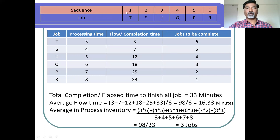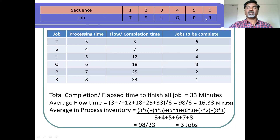Once you identify the job sequence, you prepare a table. The first column of the table should list the jobs in the sequence obtained using the SPT method. The sequence is: first process job T, then S, then U, then Q, then P, then R. In this fashion, we process the jobs.